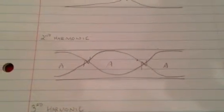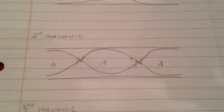This is the second harmonic. There are two nodes and three antinodes. There is one full wave in the column.